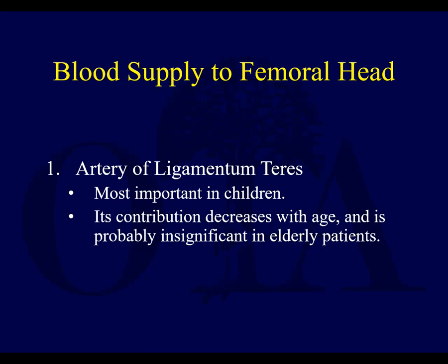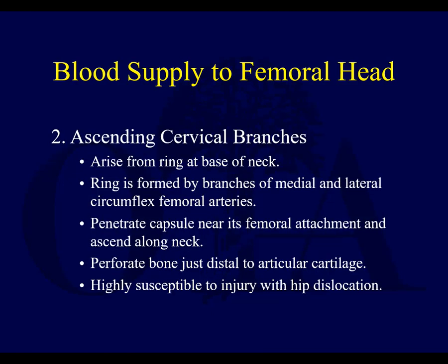The blood supply of the femoral head includes the artery of the ligamentum teres, which in children is important, but as we get older does not contribute as much — and clearly with a hip dislocation, this is going to be completely disrupted. Probably more important in most adults are the ascending cervical branches, which arise from a ring at the base of the neck formed from the medial and lateral circumflex femoral arteries. They penetrate the capsule near its femoral attachment, go up the neck, and perforate the bone just distal to the articular cartilage. This is what can get injured, kinked, or disrupted, leading to late osteonecrosis.